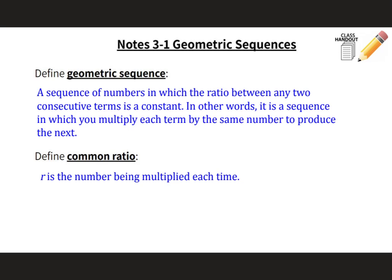Here's a video for Notes 3-1, Geometric Sequences. A geometric sequence is a sequence of numbers in which the ratio between any two consecutive terms is a constant. In other words, it's a sequence in which you multiply each term by the same number to produce the next. One way you can identify a geometric sequence is if it has a pattern of multiplying or dividing by the same number each time.